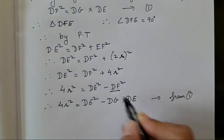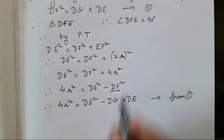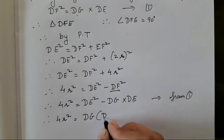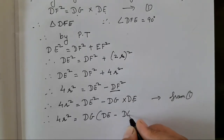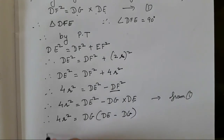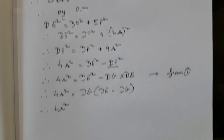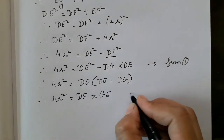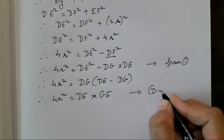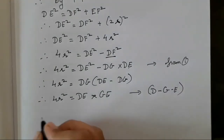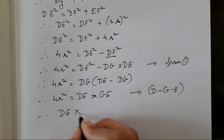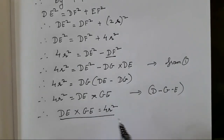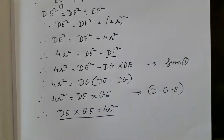Therefore 4R² = DE(DE − DG). Since G is between D and E, DE − DG = GE. So 4R² = DE × GE, which is what we had to prove. I hope this exercise is clear to everyone. If there is any confusion, please let me know in the comment section. See you in the next video!